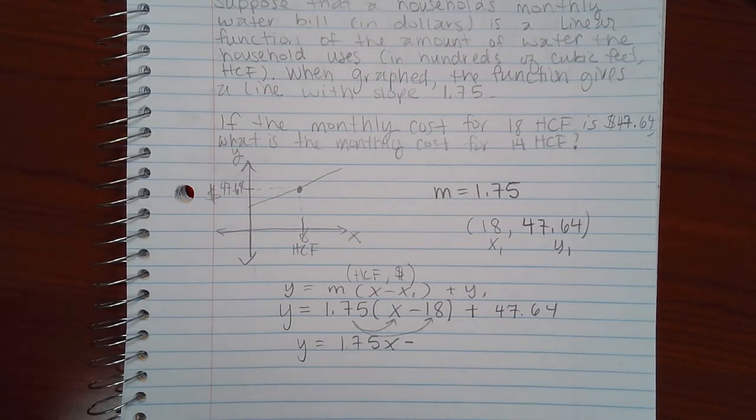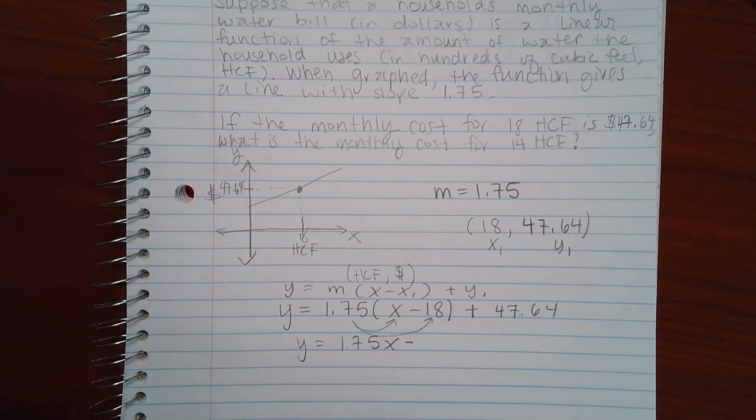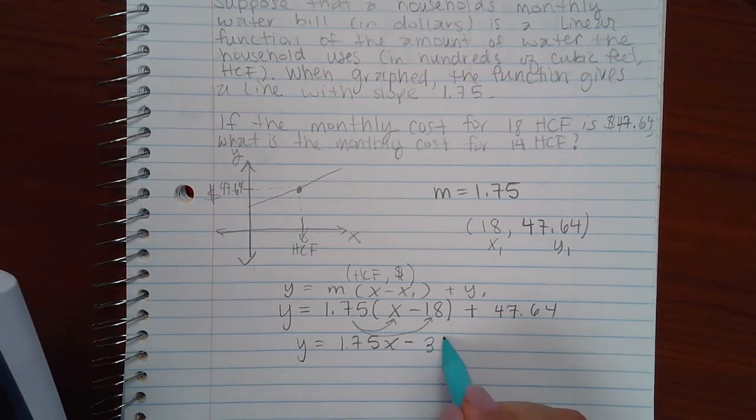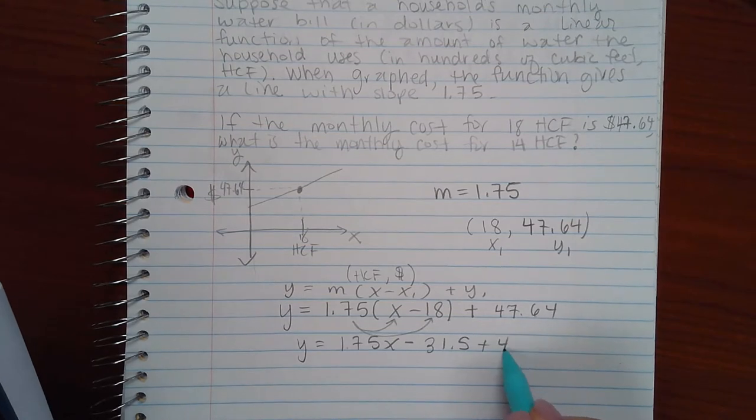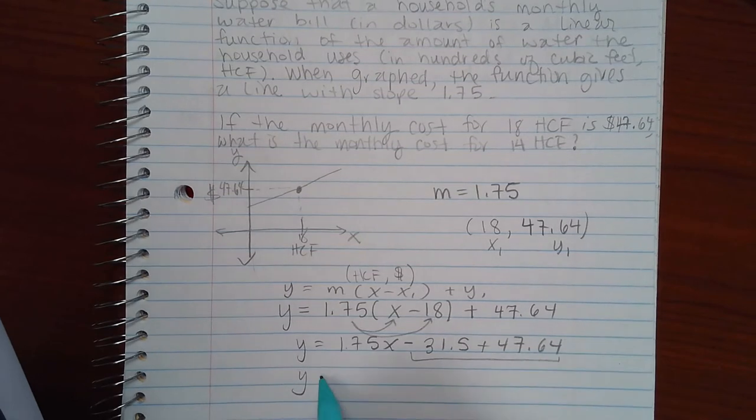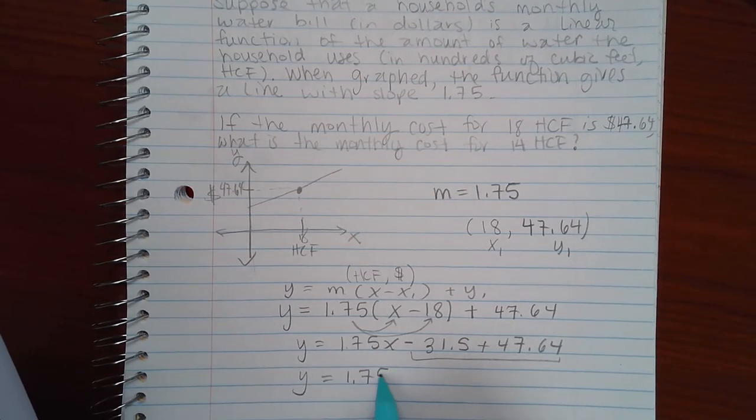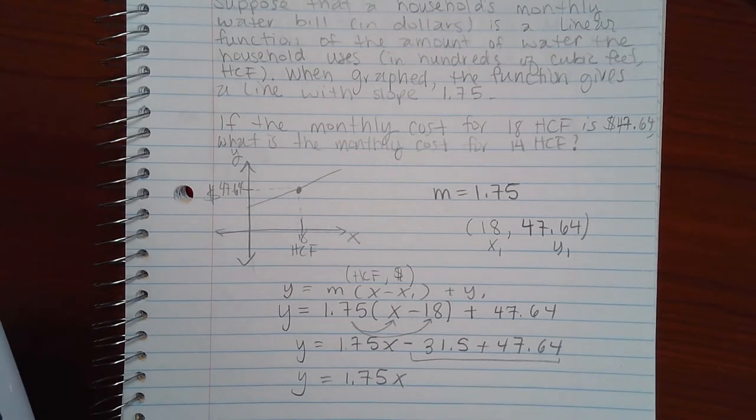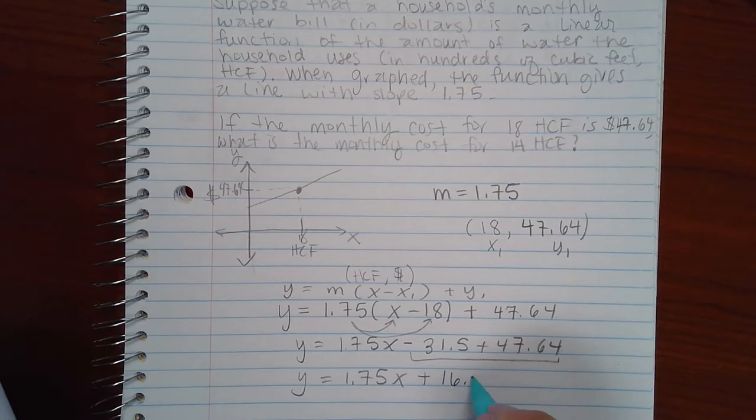Let me see what 1.75 times 18 is. It's 31.5. And then let me combine these like terms. So negative 31.5 plus 47.64. I get positive 16.24.